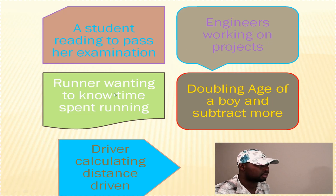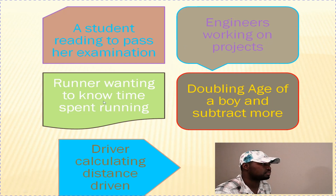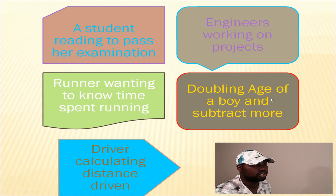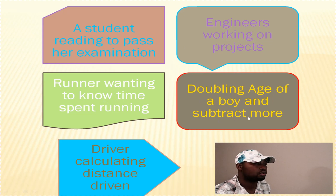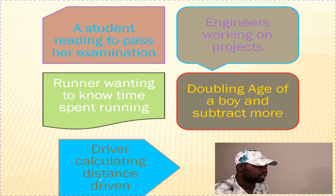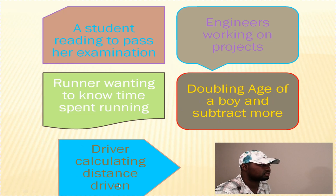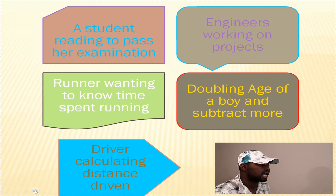Then, we are going to look at a female runner who has covered some miles at a certain speed in miles per hour, and she wants to know how long she has been running. Then, we'll look at an exercise where we are doubling the age of a little boy and subtracting the result of adding more to his original age. Finally, we are going to look at a driver calculating distance driven — she drives for certain hours at a certain speed in miles per hour.